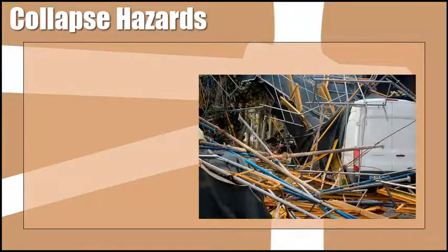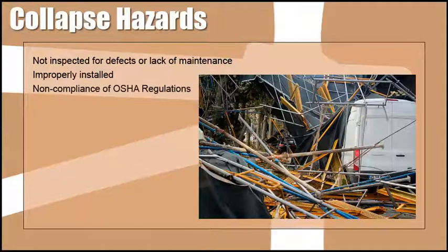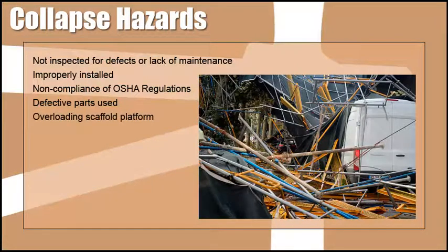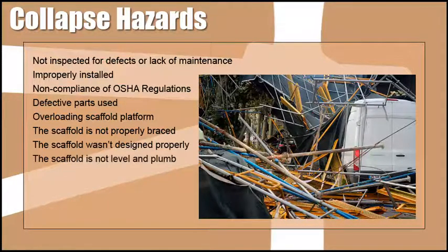There are many reasons for a scaffold collapse, but here are a few of the most common: the scaffold was not inspected for defects or lack of maintenance; the scaffolding was improperly installed; non-compliance with OSHA regulations; defective parts were used to build and support the scaffold; overloading the scaffold platform; the scaffold was not properly braced; it wasn't designed properly; the scaffold was not level and plumb; and changing environmental conditions.